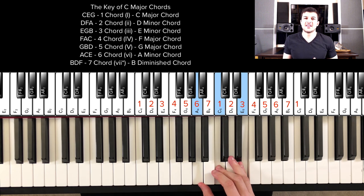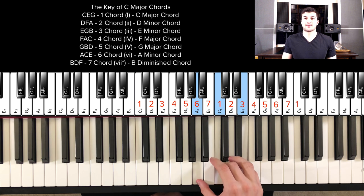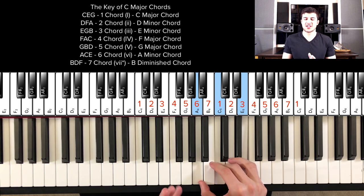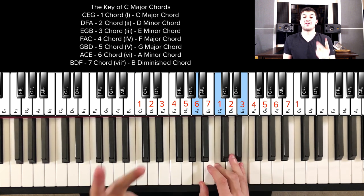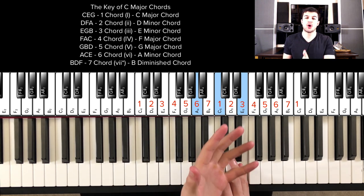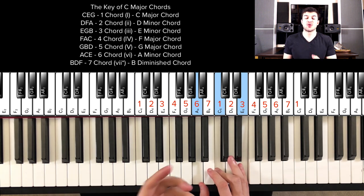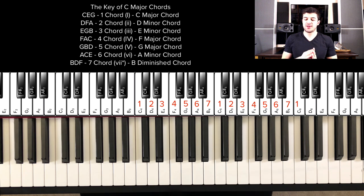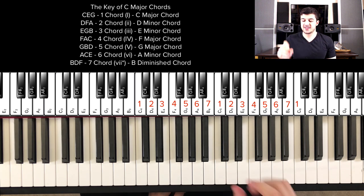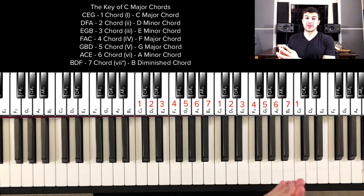Let's say I put this chord progression together: F, C, A minor. This chord progression will be denoted as the four chord, the five chord, and the six chord — so we'll have IV, V, and then vi in lowercase because it's minor. The other Roman numerals will be capitalized because they are major. The diminished chord has a lowercase symbol with a little circle at the top. This is the chord lineup playing in the key of C major.